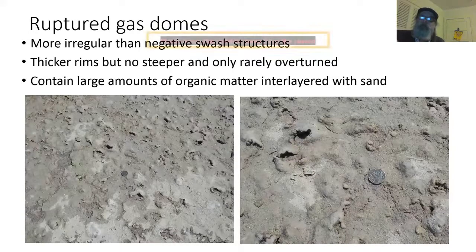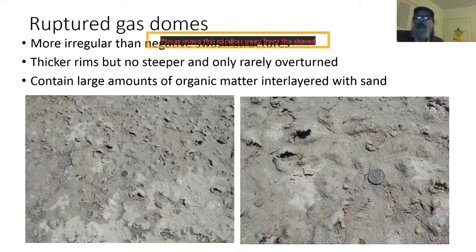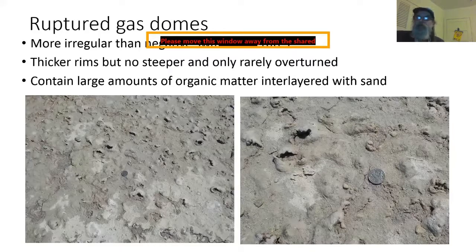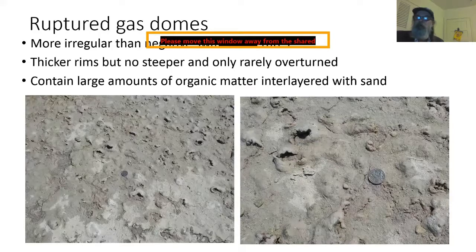The big difference, however, is that they contain large amounts of organic matter interlayered with sand — these things are 70 to 80% organic matter — as opposed to the negative swash structures, which contain none at all.